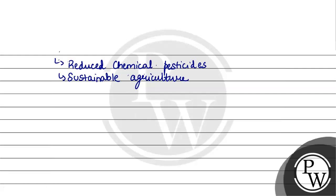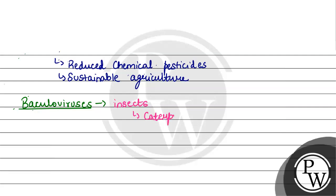Next, let's talk about baculoviruses. Baculoviruses are viruses that specifically target insects, and therefore they are used as biological control agents. They target caterpillars, which belong to the order Lepidoptera and phylum Arthropoda.